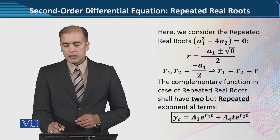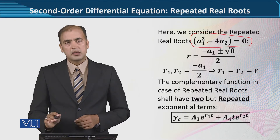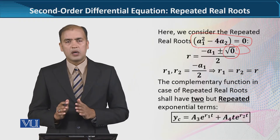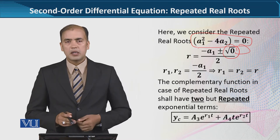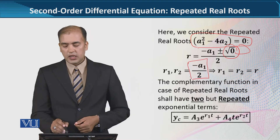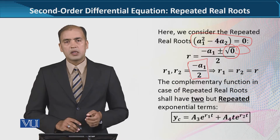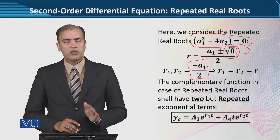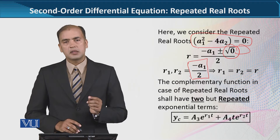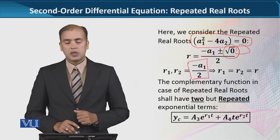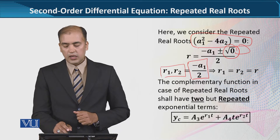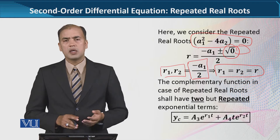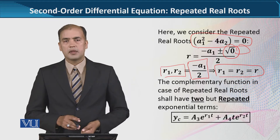Repeated real root case میں discriminant zero ہوتا ہے۔ جب یہ zero ہوگا تو quadratic formula میں discriminant کی term کی جگہ ہم zero لکھ سکتے ہیں۔ جب ہم نے zero لکھا تو plus minus zero ہوا، اس لیے دونوں possibilities کا answer same آیا، that is minus a1 over 2۔ اس کا مطلب r1 equals r2، اور ہم دونوں کے لیے ایک symbol r بھی use کر سکتے ہیں۔